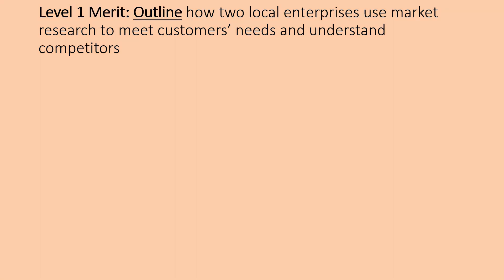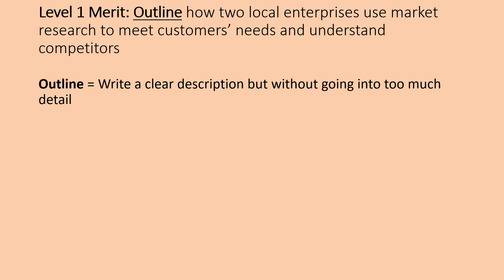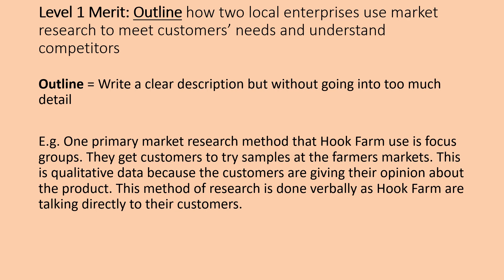At level one merit, we are asked to 'outline.' Outline differs from identify — we want a clear description this time without going into too much detail, though it can still be fairly basic. For example, one primary market research method that Hook Farm uses is focus groups: they get customers to try samples at the farmers markets. This is qualitative data because the customers are giving their opinion about the product. This method of research is done verbally as Hook Farm is talking directly to their customers. We've described it and used specialist terms like 'primary market research' and 'qualitative data.' So outlining is a clear description of what they do, without going into too much detail.